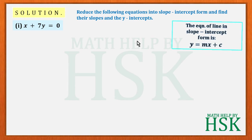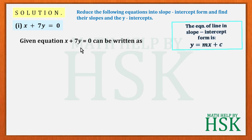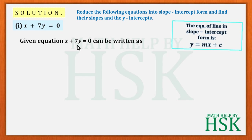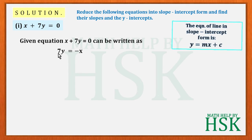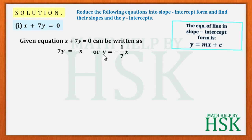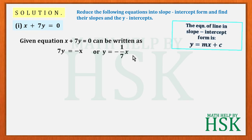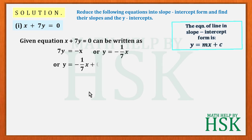For part one, I'm going to take the term of x to the right-hand side and keep the term of y on the left-hand side. So I get 7y = -x. In slope-intercept form the coefficient of y is always one, so by cross multiplication I can write this as y = -1/7 x.